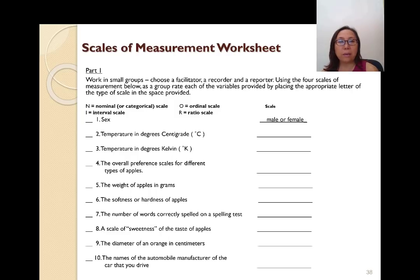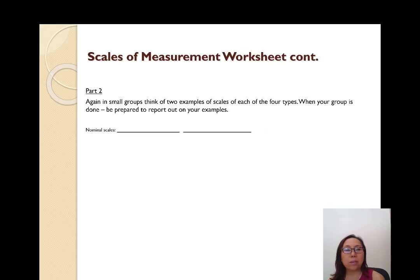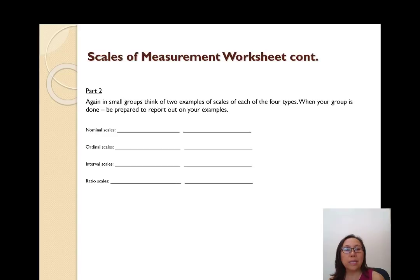One of the handouts is the scale of measurement worksheet, which contains ten different types of variables to measure. The exercise is to determine what the scale looks like and decide which of the four types each variable belongs to. This helps us get familiar with the four different types of data, because in the next lesson we will talk about how certain types of data are analyzed differently. There are also spaces to come up with your own examples of nominal, ordinal, interval, and ratio scales.